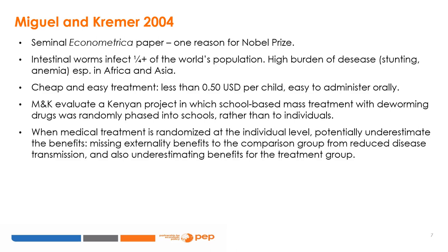Intestinal worms infect about one-quarter of the world population and imply a high burden of disease, for instance in terms of stunting and anemia, especially for young children in Africa and Asia. Treatment for this disease is cheap and relatively easy — it can be administered orally and costs less than 50 cents per child.